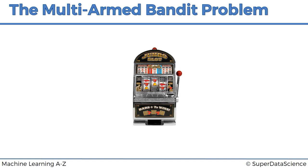Why is it called the bandit? Because these machines were one of the quickest ways to lose your money in a casino. Back in the day there was about a 50-50 chance whether you'd win or lose money. Then apparently a bug was put into them, so people were losing even more frequently than 50% of the time — hence the name bandit, because it was basically robbing you of your money. That's why it's called the one-armed bandit.